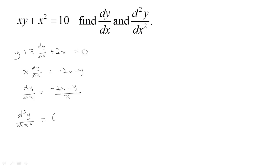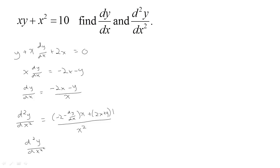The derivative of the top is (-2 - dy/dx) times the bottom, which gives an x. Then we subtract the top — since we're subtracting a negative, that becomes (2x + y) — times the derivative of the bottom, which is 1, all over the bottom squared, so all over x squared. Distributing gives us negative 2x minus x·(dy/dx), plus 2x plus y, all over x squared.